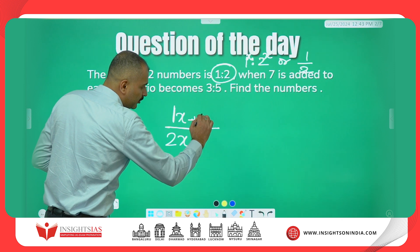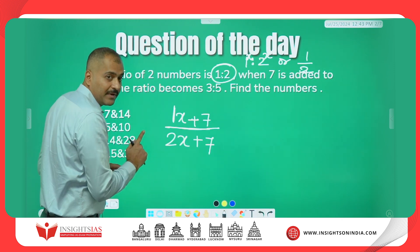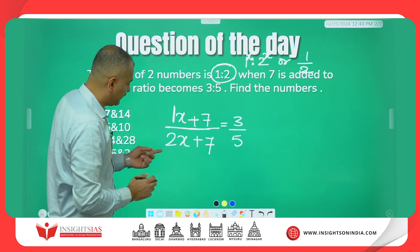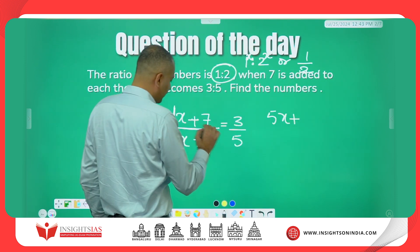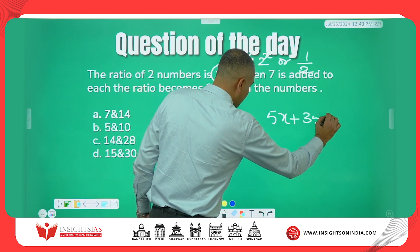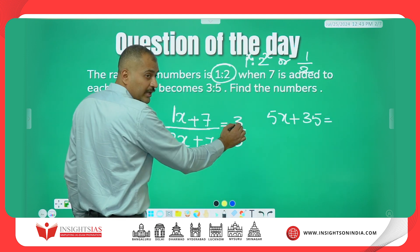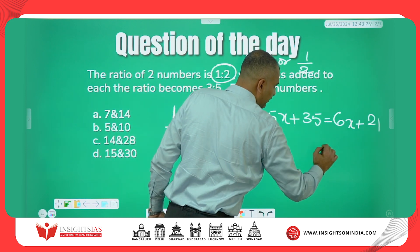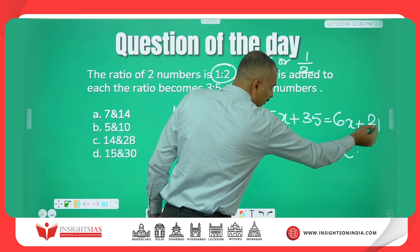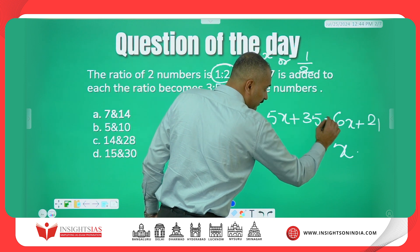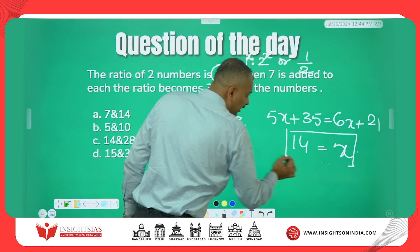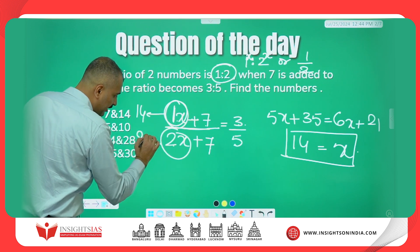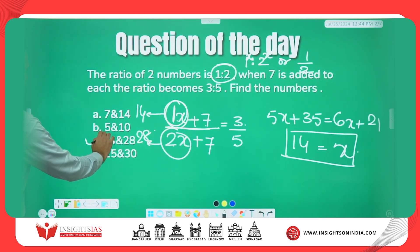When I add 7 to each of these numbers — adding 7 to 1x and adding 7 to 2x — the result has to be in the ratio 3 by 5. Solving: 5(x + 7) = 3(2x + 7), which gives 5x + 35 = 6x + 21. So x equals 14. If x is 14, then 2x is 28. The answer is 14 and 28, option C.